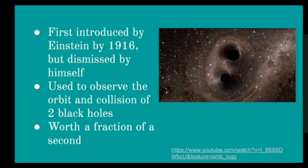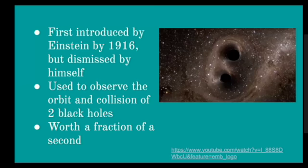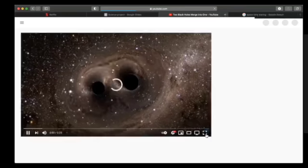Gravitational waves could be used to observe the orbit and collision of two black holes within a fraction of a second. Gravitational waves are basically when an object in space creates ripples in space-time. Like I said before, space-time can ripple or bend. The rippling causes gravitational waves. This is used to observe the collision of two black holes, which was what first brought it to the scientific community. Here in this video, it's a 35-second video that basically observes the orbiting of two black holes.